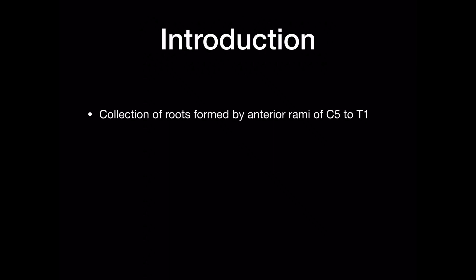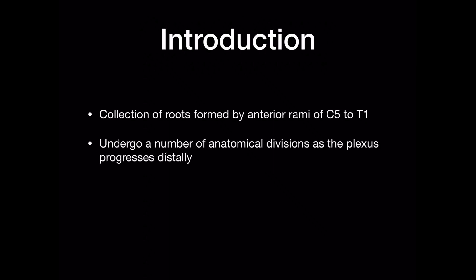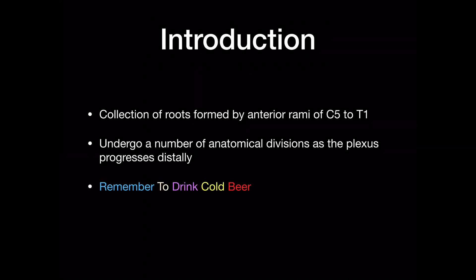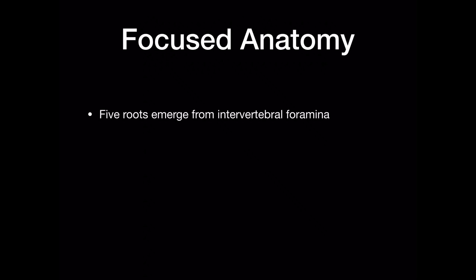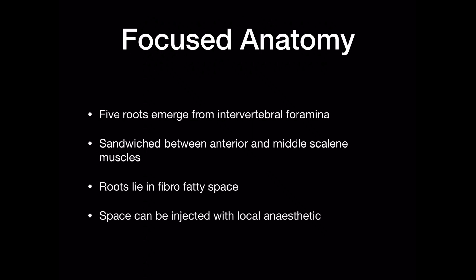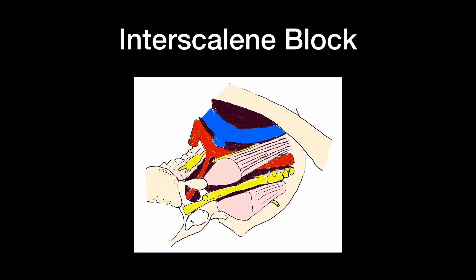Introduction. The brachial plexus is a collection of roots formed by the anterior rami of C5 to T1. It undergoes a number of anatomical divisions as the plexus progresses distally, and this can be remembered using the mnemonic 'Remember to Drink Cold Beer', which stands for roots, trunks, divisions, cords and branches. The five roots emerge from the intervertebral foramina and are sandwiched between the anterior and middle scalene muscles. The roots lie in a fibro-fatty space which can be injected with local anaesthetic. The most common form of block used by the anaesthetist to target the roots is the interscalene block.